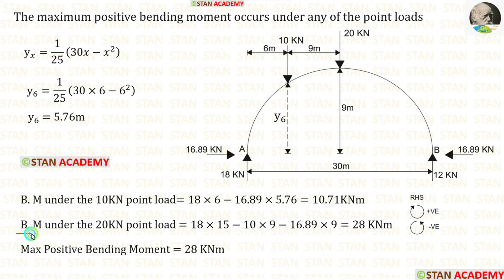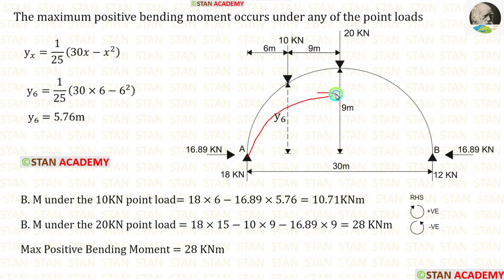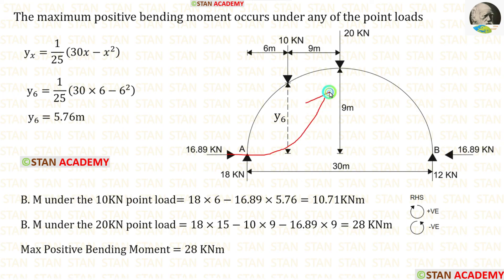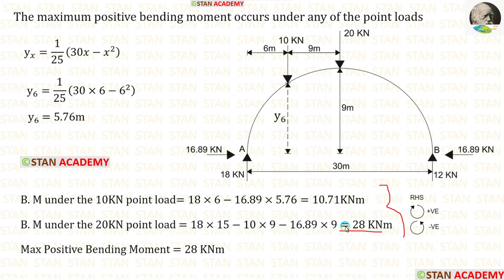Now let us calculate the bending moment under the 20 kN point load at the crown. Up to this section, there are two vertical loads: 18 kN and 10 kN, plus the horizontal thrust. The vertical reaction 18 kN acts clockwise — positive — with distance 15 meters. The point load 10 kN acts anticlockwise — negative — with distance 9 meters. The horizontal thrust also acts anticlockwise — negative — with height 9 meters. We get 28 kN·m. Comparing both values, 28 kN·m is bigger, so the maximum positive bending moment equals 28 kN·m and it occurs at the center.